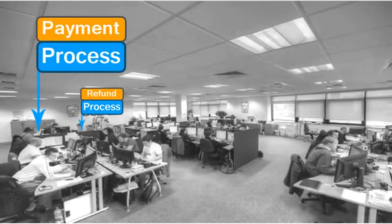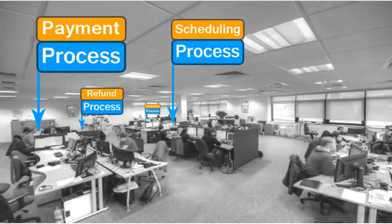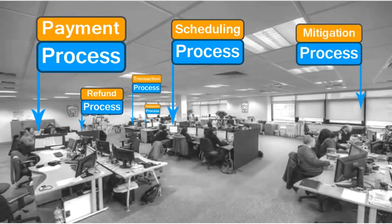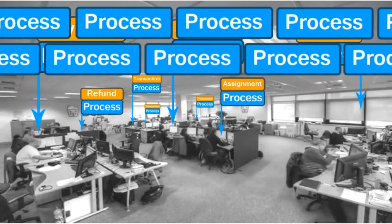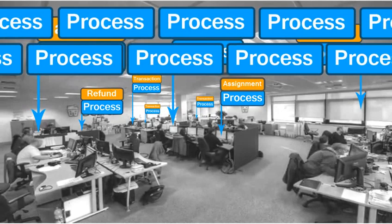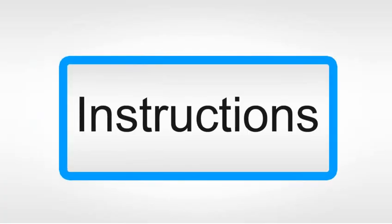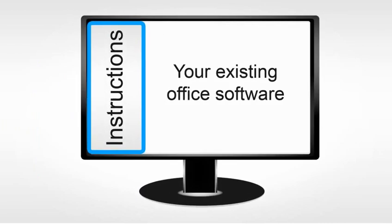Offices are full of different processes to get things done. But do you have an efficient way to manage all of the different processes that take place in your office? Where are the instructions for these processes located? What if you could provide all of the instructions side-by-side your existing software applications?